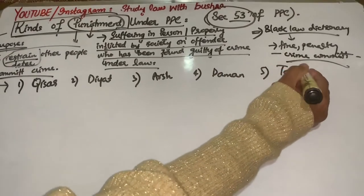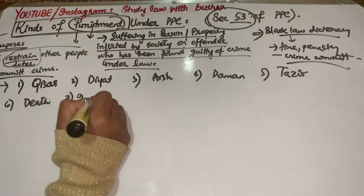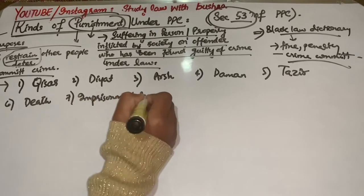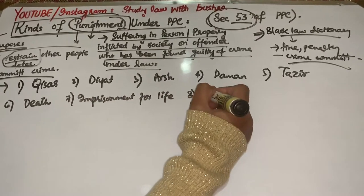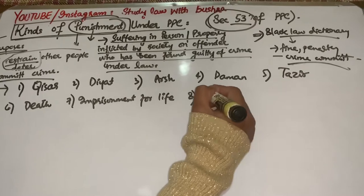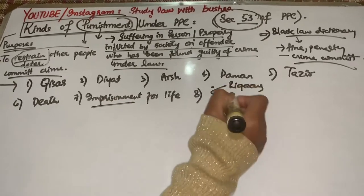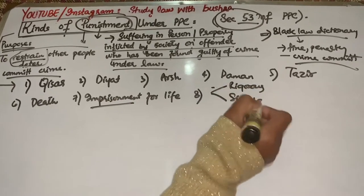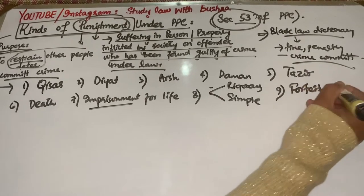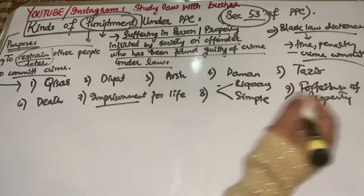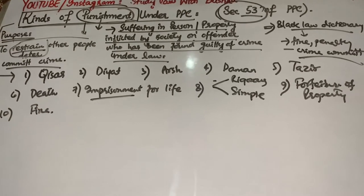Number one: Kisas. Number two: Diyat. Number three: Arsh. Number four: Daman. Number five: Tazir. Number six: Death. Number seven: Imprisonment for life. Number eight: Imprisonment, further divided into rigorous or simple imprisonment. Number nine: Forfeiture of property. Number ten: Fine.